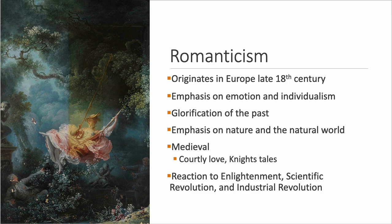One final influence needed to understand the literature of this time is the aesthetic movement known as Romanticism. Originating in Europe in the late 18th century, it became a predominant form of artistic production by the 19th century, largely as a reaction to the rationality of the Enlightenment. While Enlightenment writers focused on reason, Romantics focused on emotion and the individual's emotional reaction to the natural world. They looked to the past — especially the medieval period with its courtly love and quests — and reacted against the Industrial Revolution's transformation of workers into cogs in an unfeeling machine.